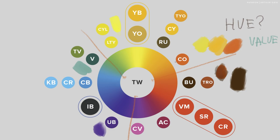The third question is chroma — how strong the color is. A color can be saturated or desaturated, and asking yourself these three questions — hue, value, chroma — you can narrow down the procedure and mix it.